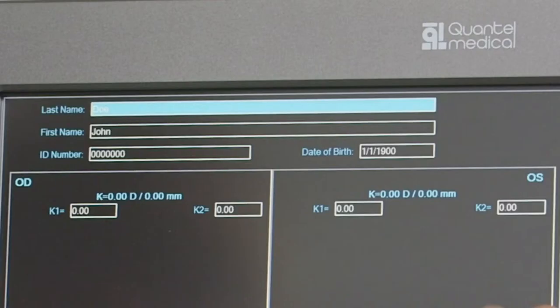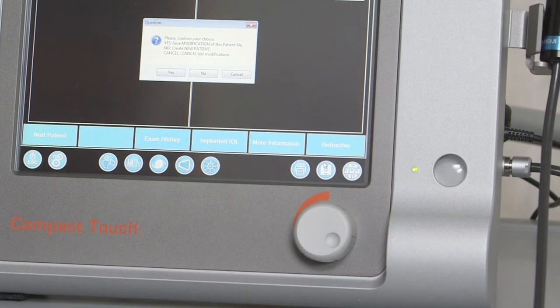Once a patient is selected, the examiner can enter two keratometry values for each eye. For patients who have had corneal refractive surgery, IOL calculation can be more complex. Selecting Refractive allows the examiner to enter additional parameters that may help determine IOL power in these cases.